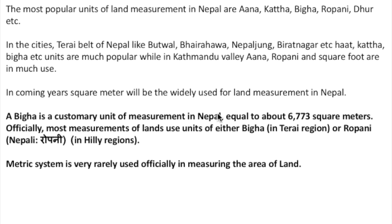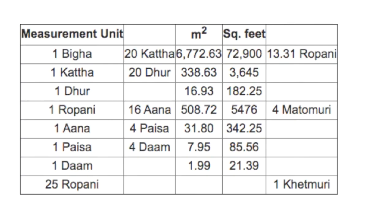One Bigha equals 20 Katha, which is equal to 13.1 Ropani. One Katha equals 20 Dhur, and one Dhur equals 16.93 square meters. These are also expressed in hectares and square feet, which you can see in this particular table.